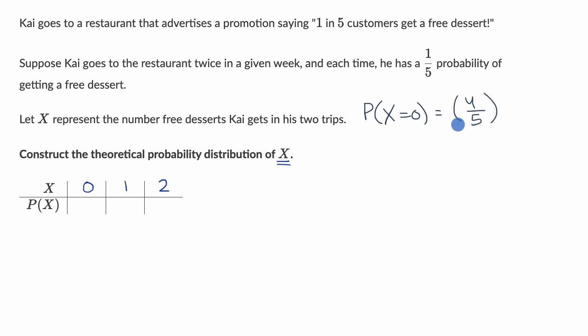And the probability of not getting it on two of the days, I would just multiply them, because they are independent events. So four over five times four over five. So the probability that X is equal to zero is going to be 16/25, 16 over 25.